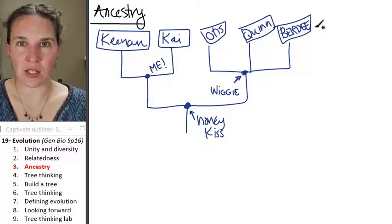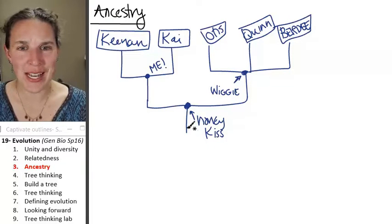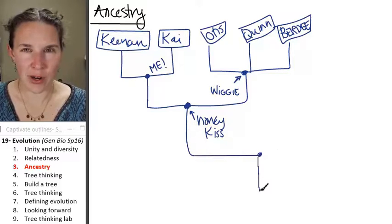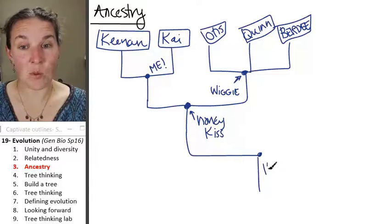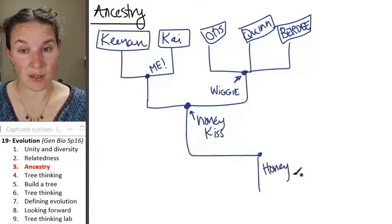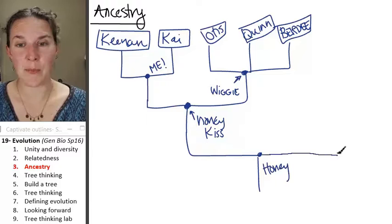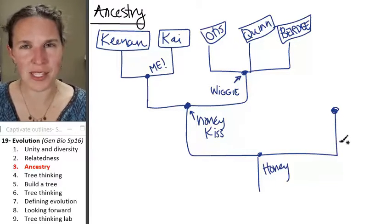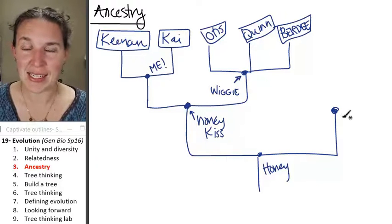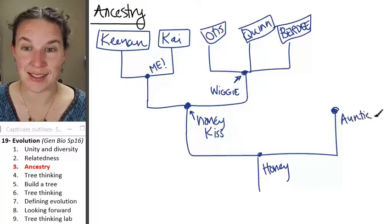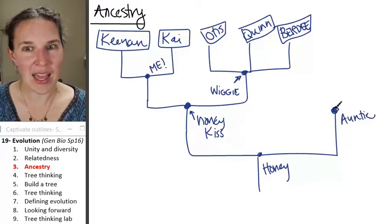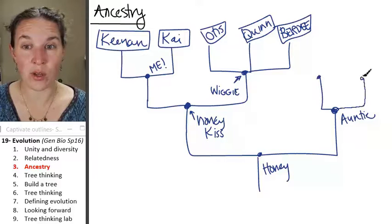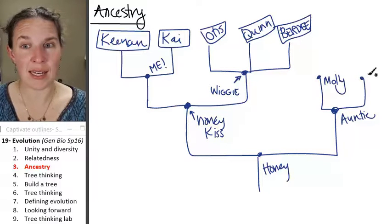Did Honeykiss have an ancestor? You know she had an ancestor. This is my grandma. My grandma's name was Honey. Just plain old Honey, not Honeykiss. And she actually gave rise to my auntie. Are you following this? And my auntie is, we'll call her auntie. And auntie actually gave rise to two people, Molly and Katie.